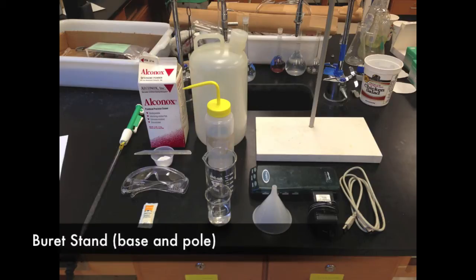You're also going to need a burette stand. A burette stand is composed of two parts: the stand itself, the white part in the picture, and the metal pole, where you'll be placing the burette clamp.